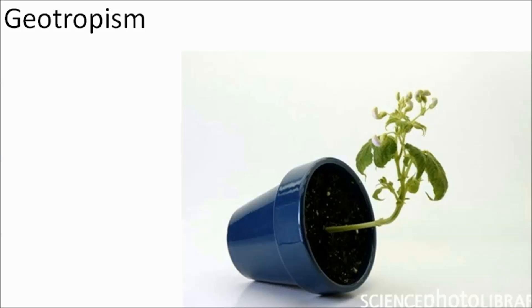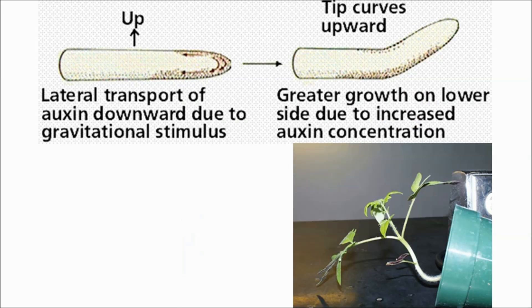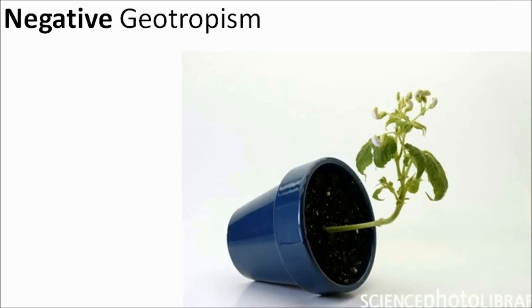If you throw a handful of seeds onto the soil, they obviously don't all fall the right way up. So if a seed falls upside down or sideways, how does it end up growing towards the sun? Well, the auxin moves down to the base of the shoot. This causes faster growth on the underside of the shoot, and if the underside grows faster than the top side, the shoot is going to bend up towards the sun. As the stem is growing away from the earth, this is called negative geotropism — geo meaning earth.